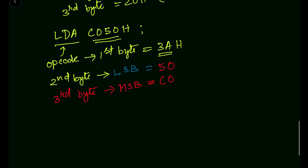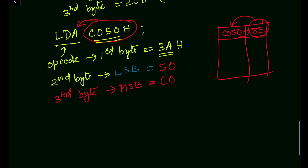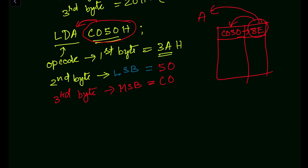C0H is the third byte in this instruction. The operation performed is: load the content of memory address C050H into the accumulator. Suppose the content at memory location C050H is 8EH. After executing this instruction, 8EH will be written into the accumulator. Since the accumulator in the 8085 is 8-bit wide, 8EH — which is 1 byte — fits perfectly.